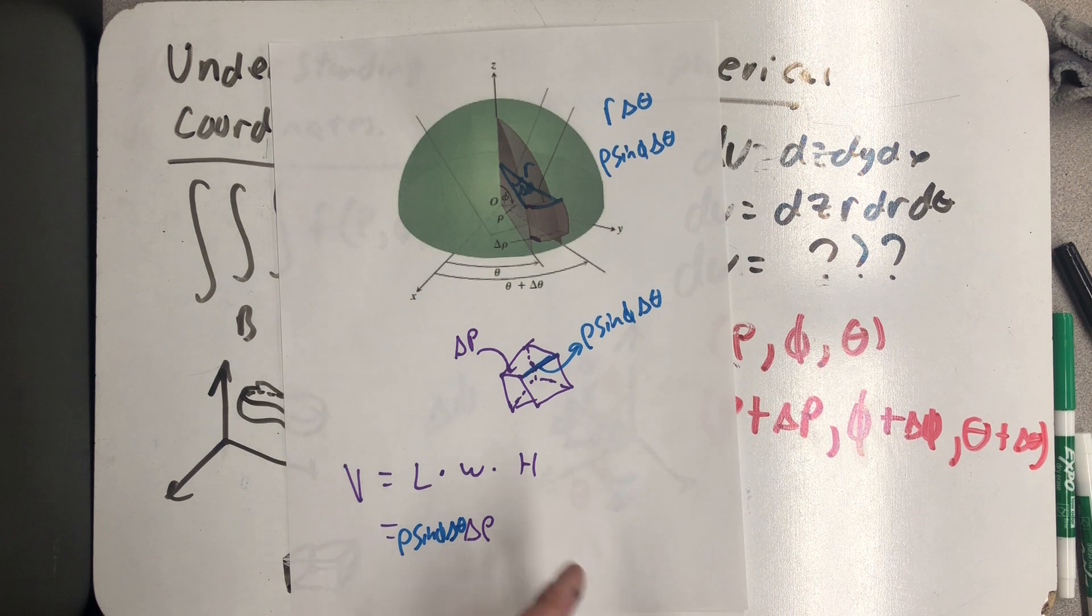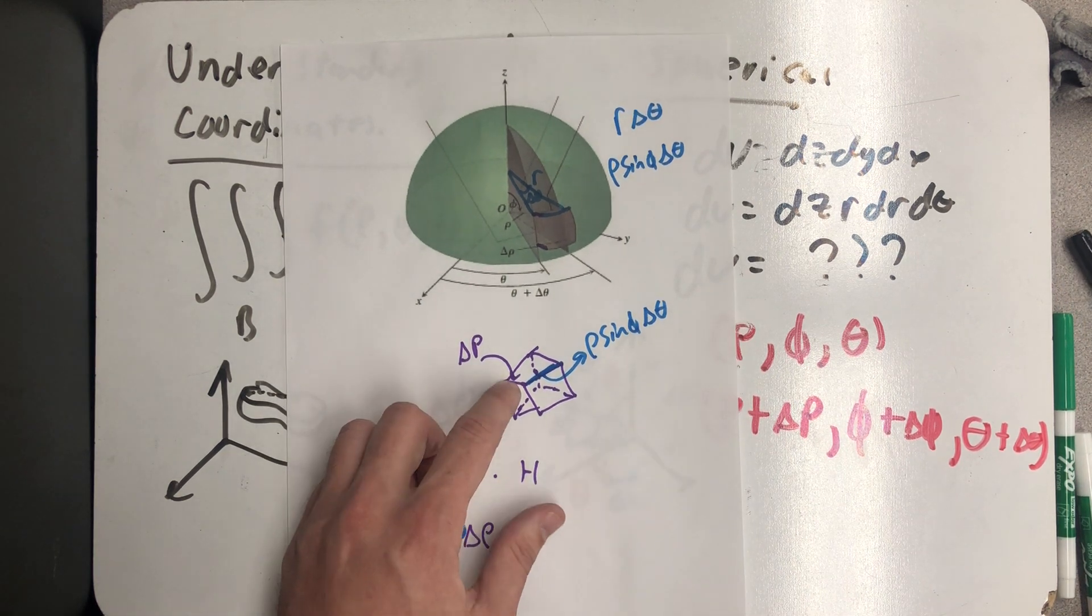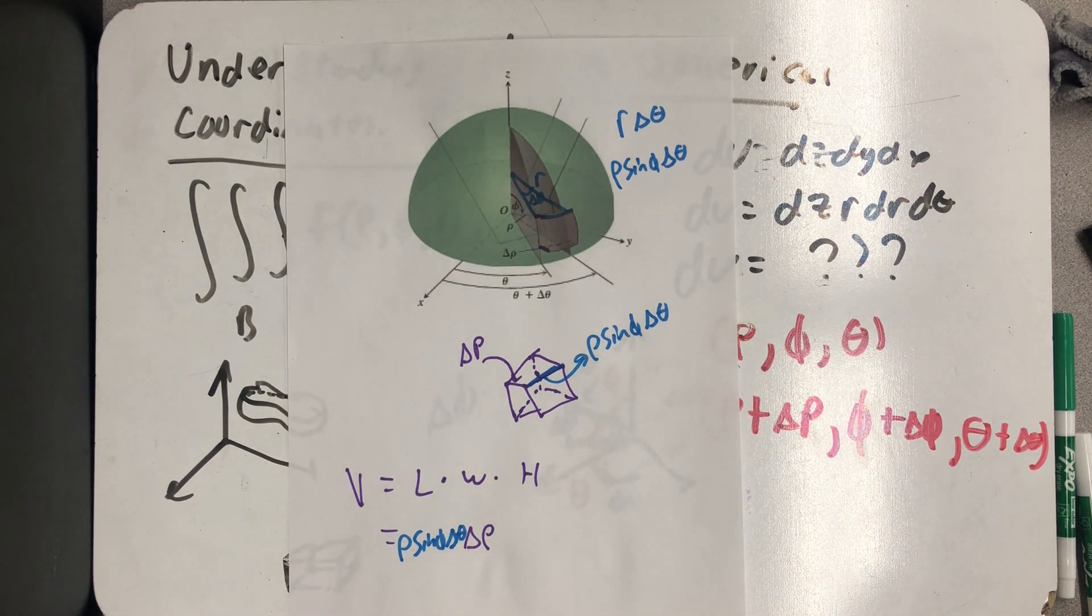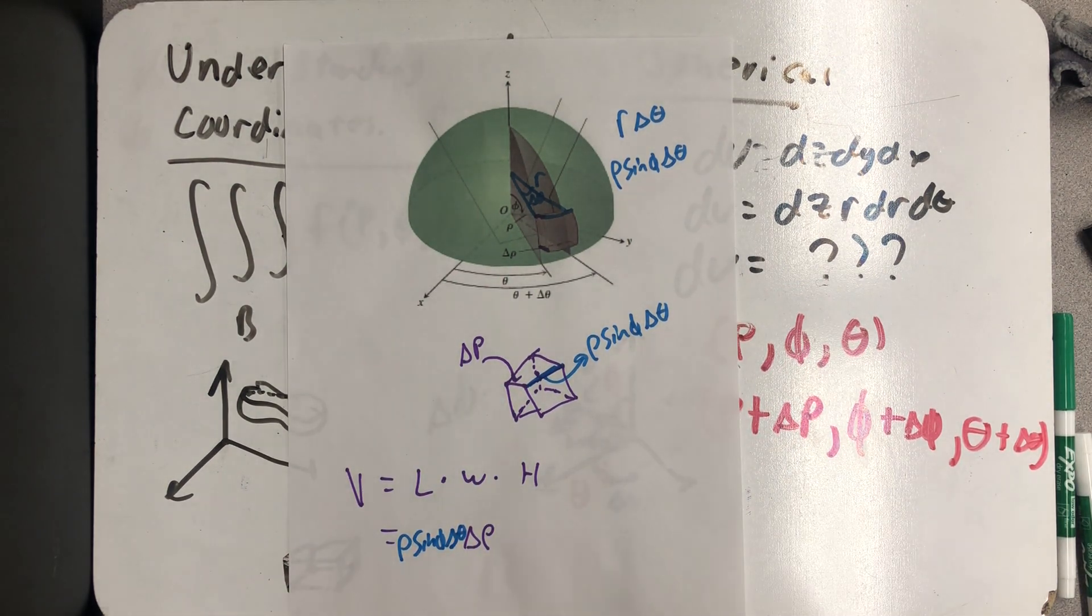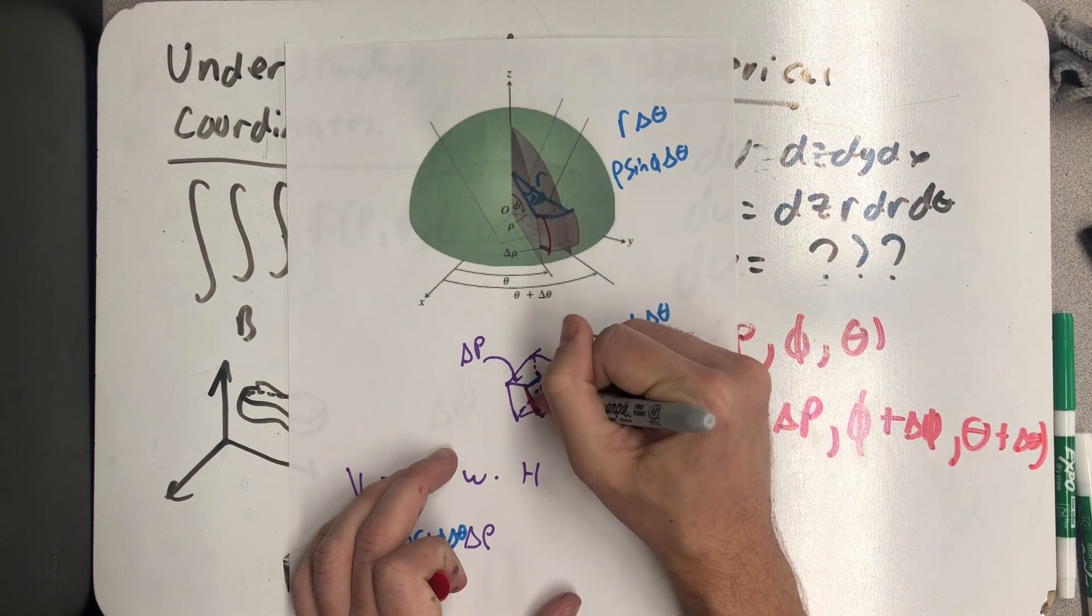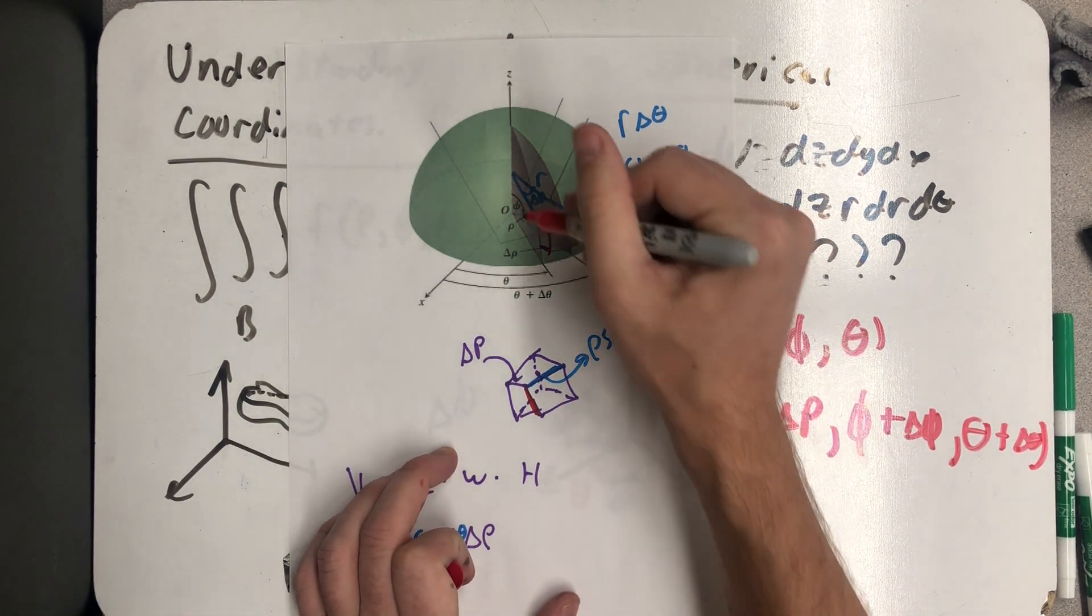Okay, and so one dimension left to go. So I have Δρ, I have this blue length ρ sin φ Δθ, and now I just need to know the last little bit. And so that's this distance down here, which in my placeholder rectangular prism is that one.